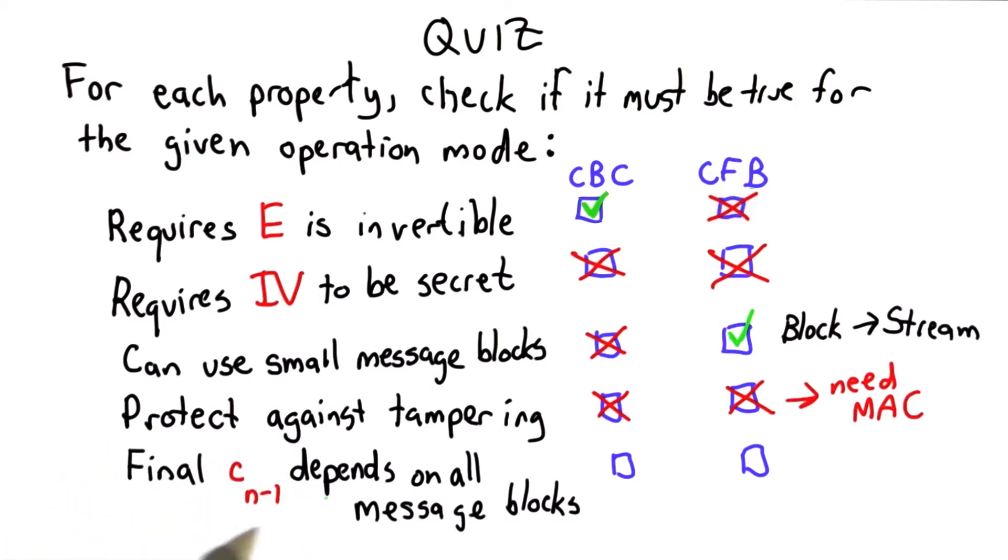The final property is that the final cipher text blocks depend on all of the message blocks, and this is actually true for both. And this turns out to be a property that's very useful for what I'm going to talk about next, which is cryptographic hash functions.